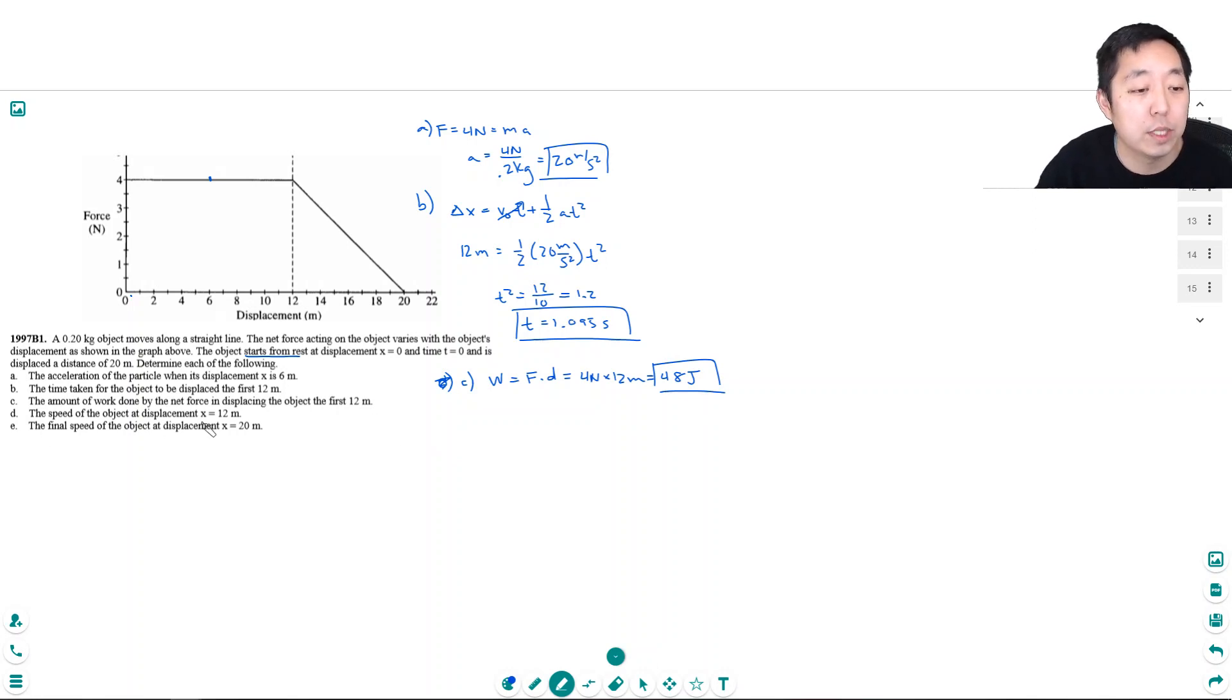Okay, D, the speed of the object at displacement x equals 12 meters. Okay, there's two ways to do this one. We could do it kinematically, and I'm going to do it both ways. So I could solve this by kinematics, because I know its final velocity, its initial velocity plus at.